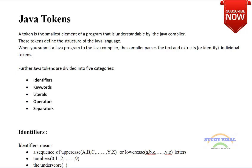A Java token is the smallest element of a program that is understandable by the Java compiler. Basically, if we type something related to Java, it should be understandable by the Java compiler. If you type things which are not understandable by Java, that can create some problem in your program. The Java compiler needs such statements which we pass to it, so it can extract the important information out of them.